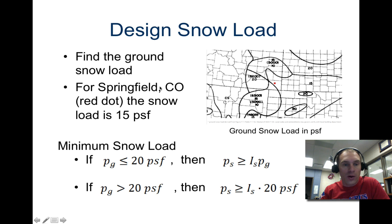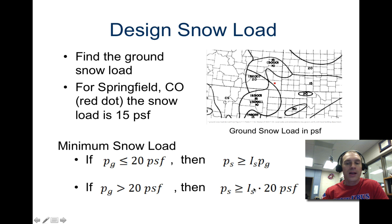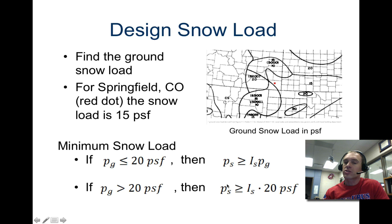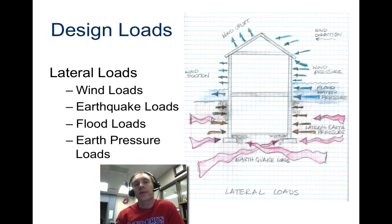First, you find the ground snow load for Springfield, Colorado — that's this red dot here, and we are in the 15 pound per square foot region. Then using the importance factor criteria, you multiply by PG, which is the ground snow load. It's just filling in the blanks based on information you find in charts. We'll do practice with a different load calculation.